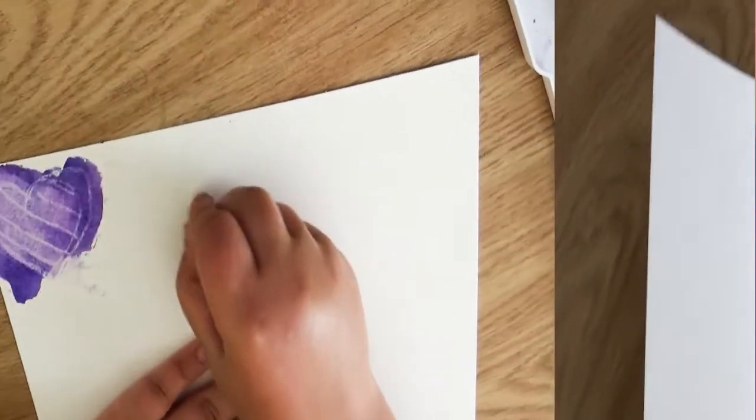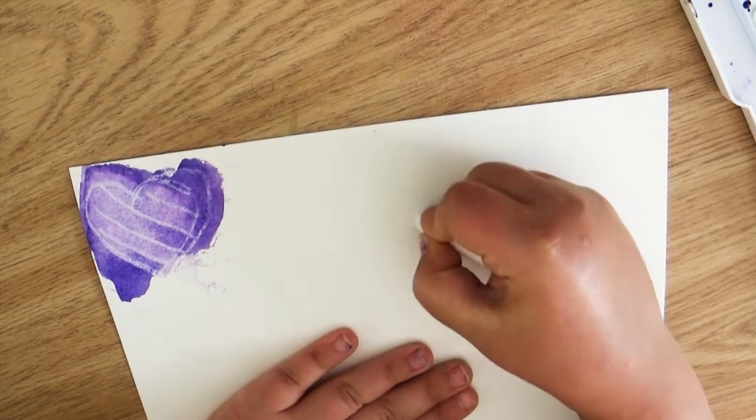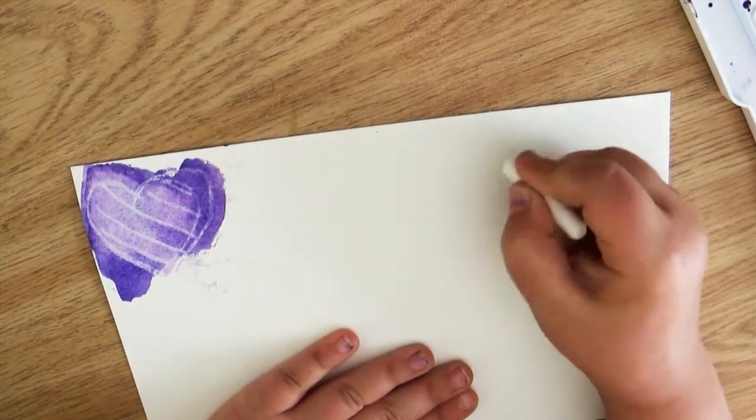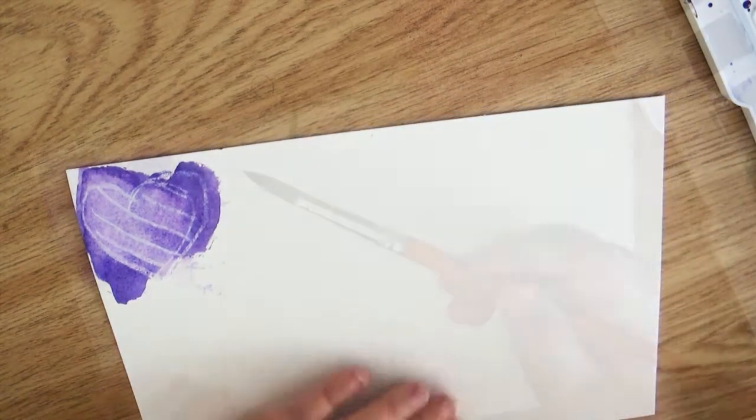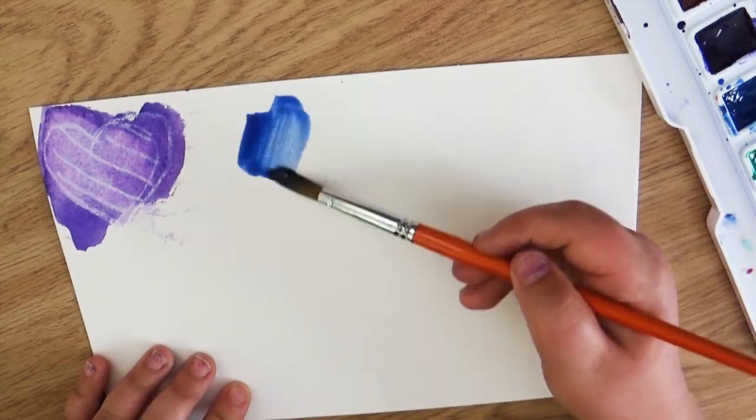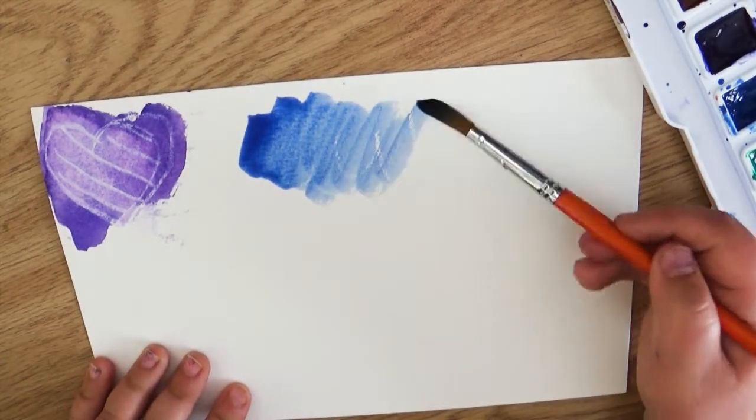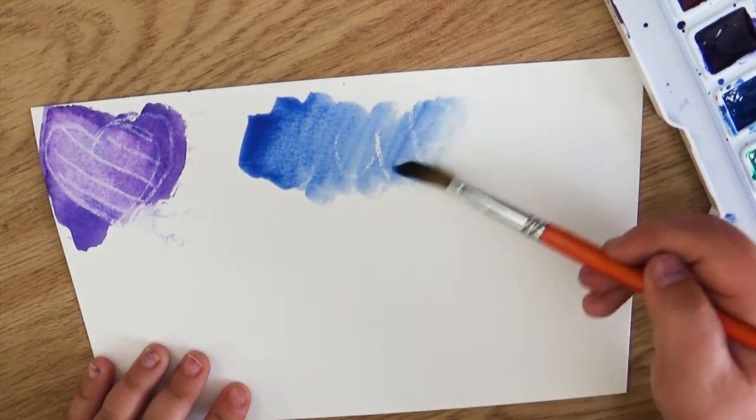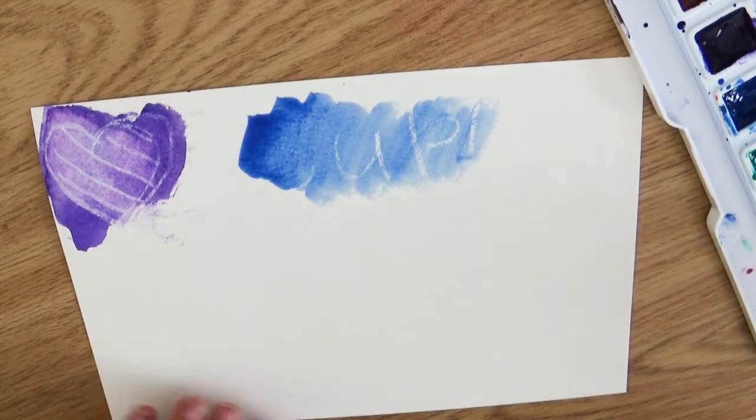So what are you supposed to create? Well that is completely up to you. You can make designs, patterns, secret messages, whatever you want. Once you finish drawing with your wax crayon, simply paint over it with some watercolor and watch the magic appear.